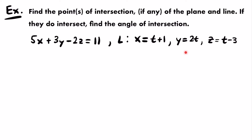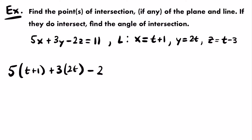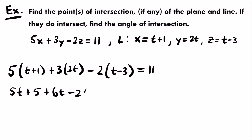Plugging in, we get 5 times (t plus 1) plus 3 times (2t) minus 2 times (t minus 3) equals 11. Simplifying by distributing gives us 5t plus 5 plus 6t minus 2t plus 6 equals 11. Combining like terms: 5t plus 6t minus 2t is 9t, and the constants 5 plus 6 give 11, so we have 9t plus 11 equals 11.